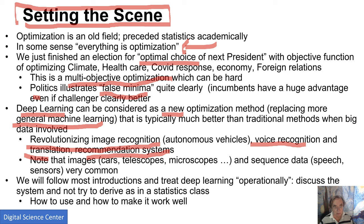Cars have image devices that take images; telescopes and microscopes do too. Lots of things produce images, and so deep learning has had significant success with them. For instance, in medicine, analysis of MRI images with deep learning to look for cancers has been hugely successful.